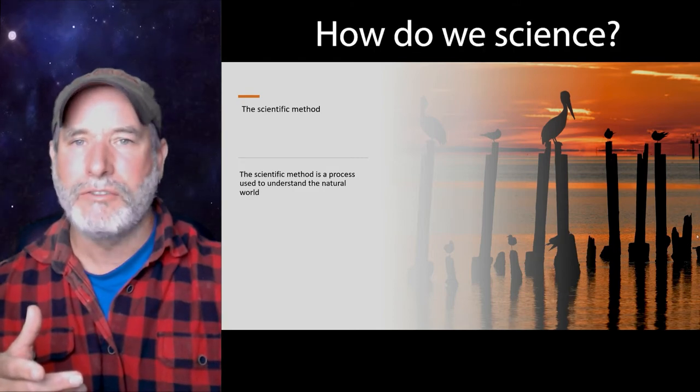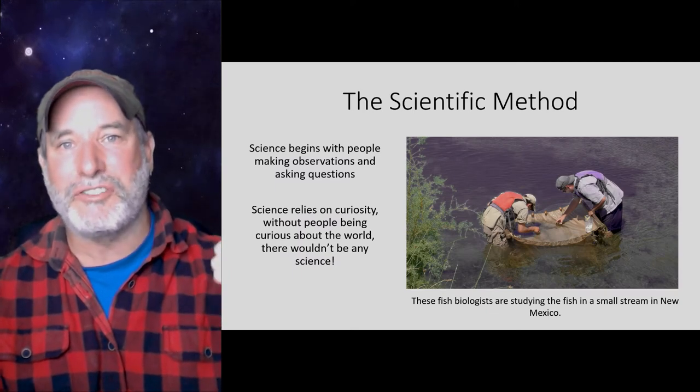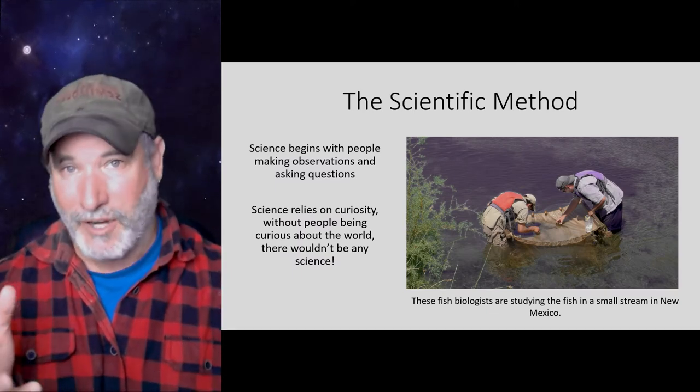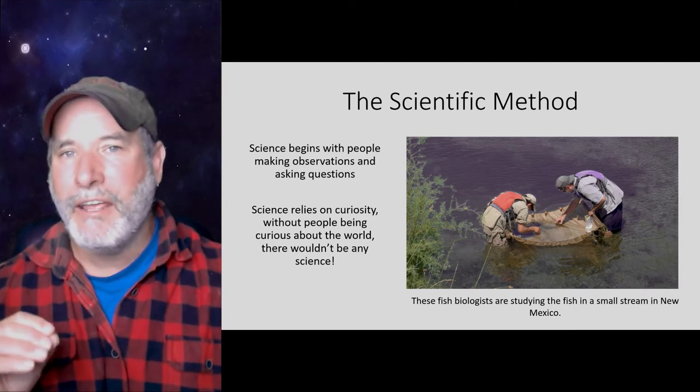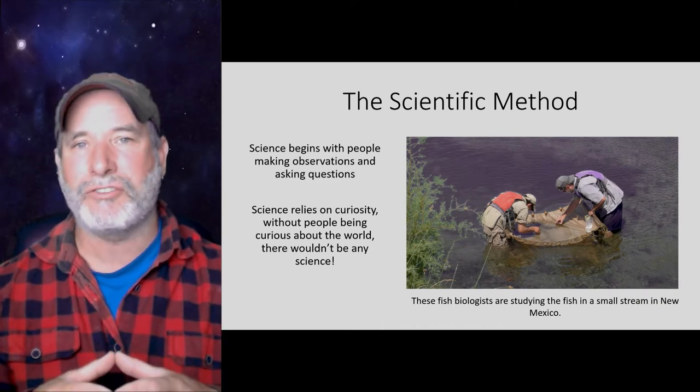How do we science? I like that — how do we science! At its heart, science is about curiosity, a desire to know, about understanding the natural world. In today's modern world we have a pretty solidified process. It's not a rigid way of doing things — it's a guiding principle of how we understand the world. Science begins when you make observations and start to ask questions about the natural world.